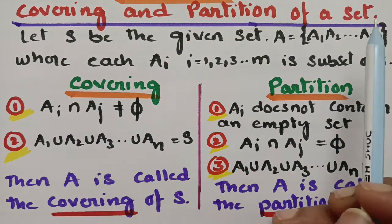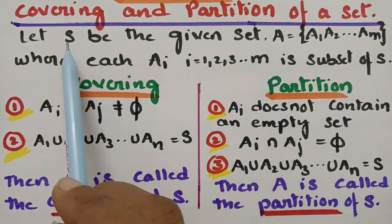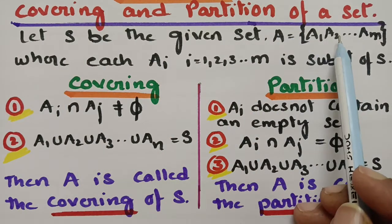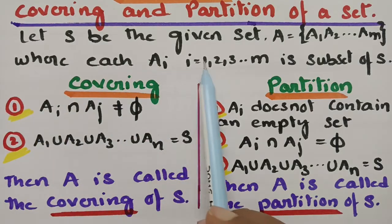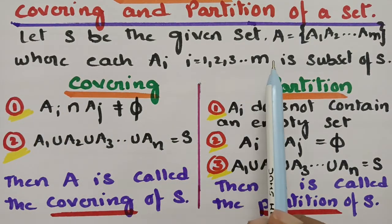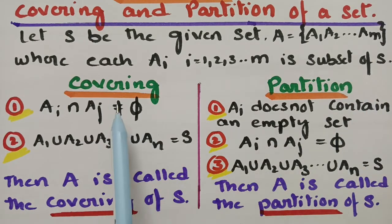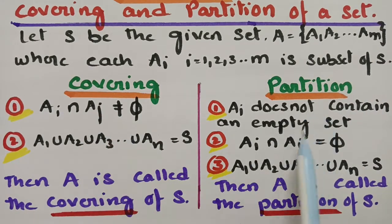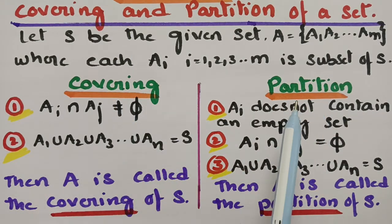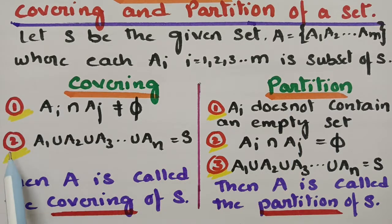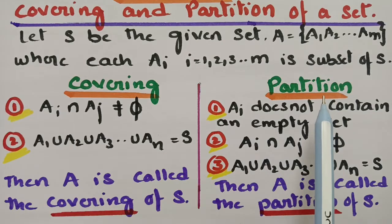So what is this covering and partition of a set? Let S be the given main set, and A — that is A1, A2, A3, and so on up to AM — are the subsets of S. There is a definition for covering and a definition for partition. These two statements are common for both: there are two conditions which should hold for covering, and three conditions which should hold for partition.